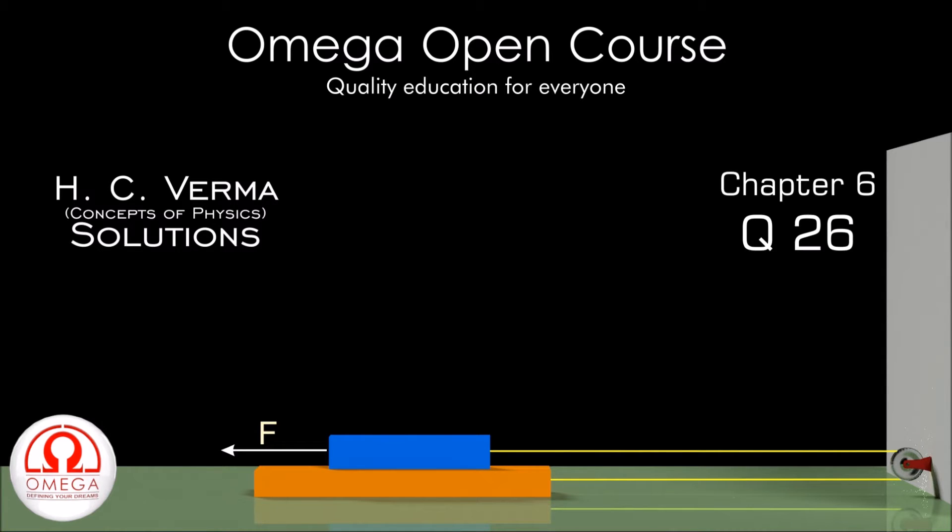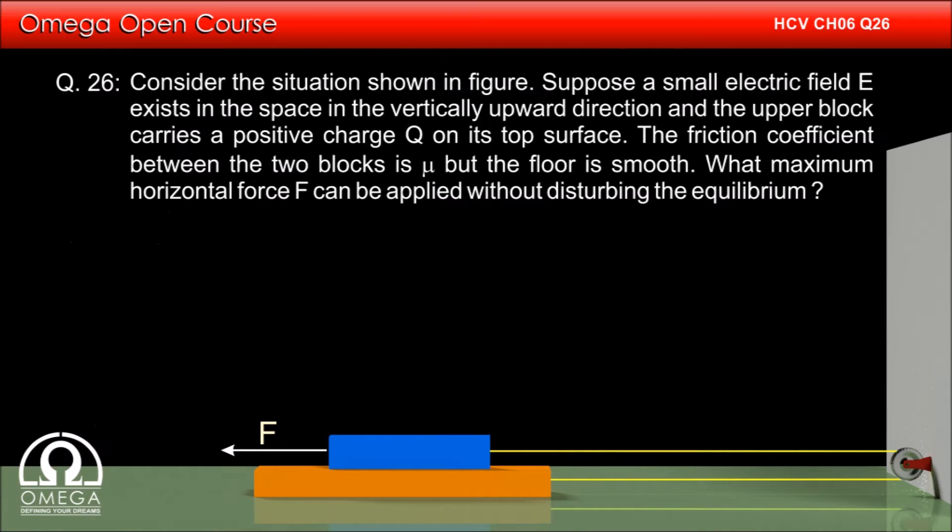H.C. Verma Chapter 6 Question 26. Consider the situation shown below. Suppose a small electric field E exists in the space in the vertically upward direction and the upper block carries a positive charge Q on its top surface. The friction coefficient between the two blocks is μ but the floor is smooth. What maximum horizontal force F can be applied without disturbing the equilibrium?